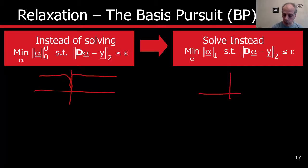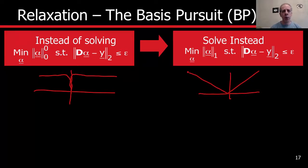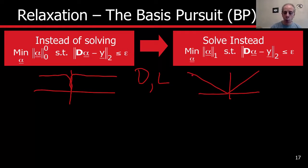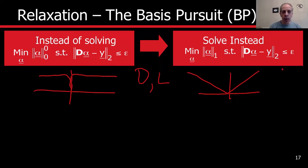In the L1 norm, the penalty increases with magnitude. The beauty of this is that under certain conditions on D and on L (the level of sparsity), we can guarantee that these two problems — L0 and L1 — are equivalent. This is a fantastic result. It says that we can move from an NP-complete, unsolvable problem into an L1 problem, which is convex and solvable, and sometimes obtain exactly the same solution in reasonable time. Very beautiful theory behind this.